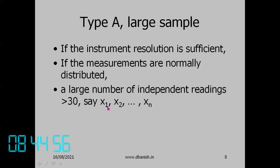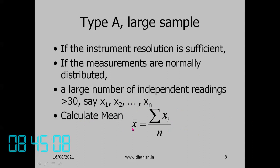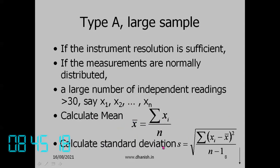Suppose observations are x₁, x₂, ..., xₙ with n ≥ 30. We calculate the mean: x̄ = Σxᵢ / n. We also calculate the sample standard deviation: s = √[Σ(xᵢ − x̄)² / (n−1)]. We use n−1 because we have already calculated the average, losing one degree of freedom.